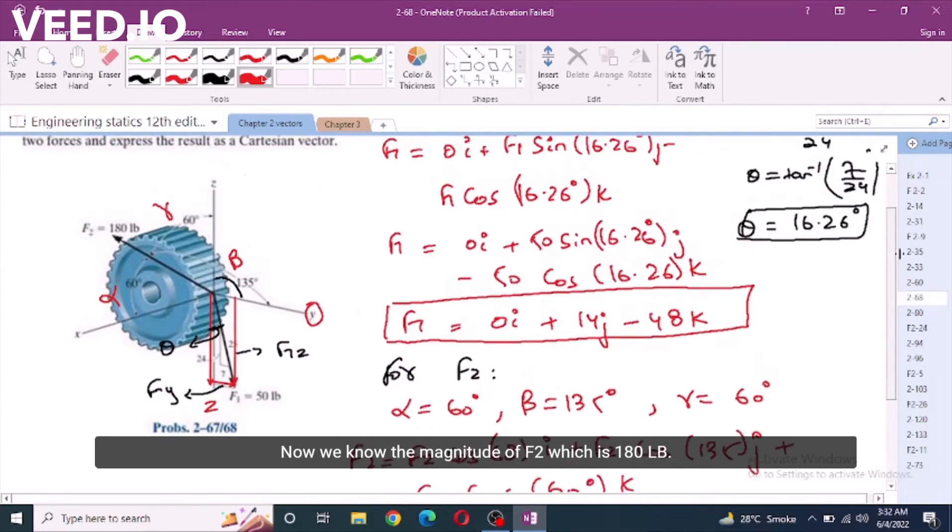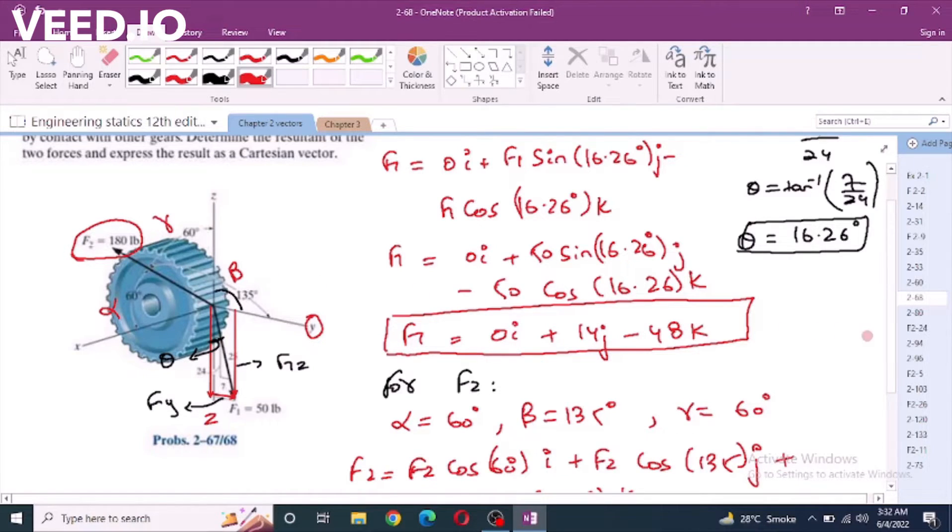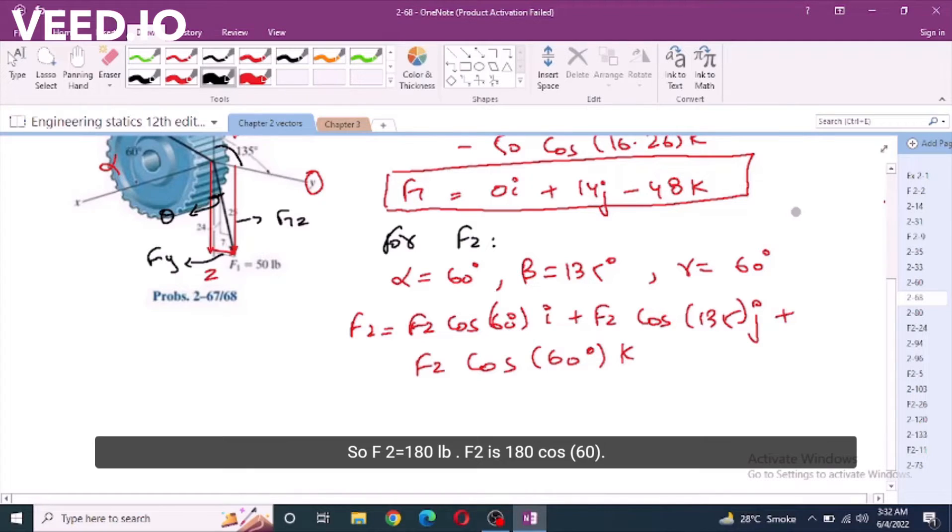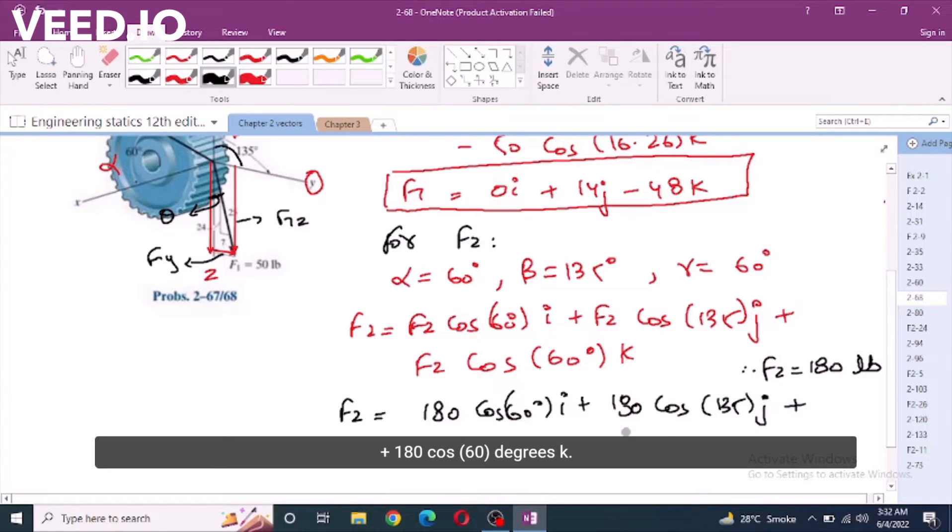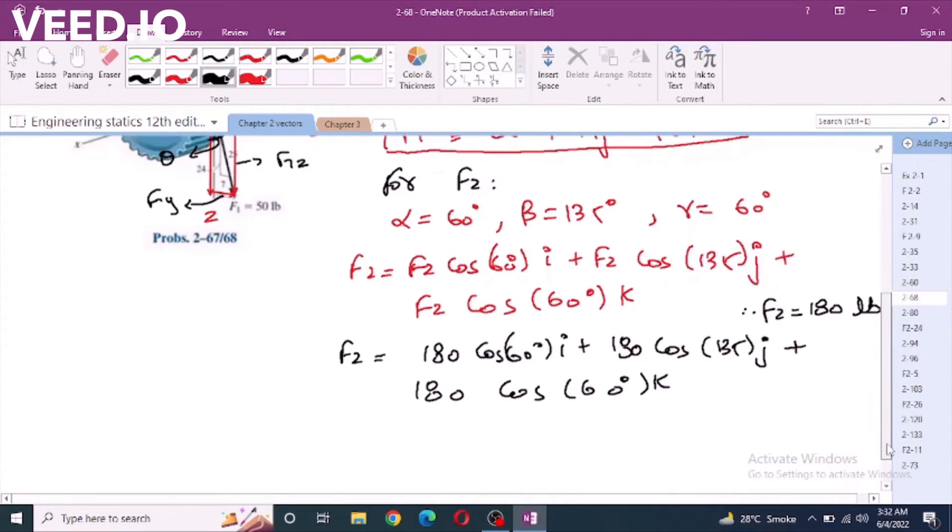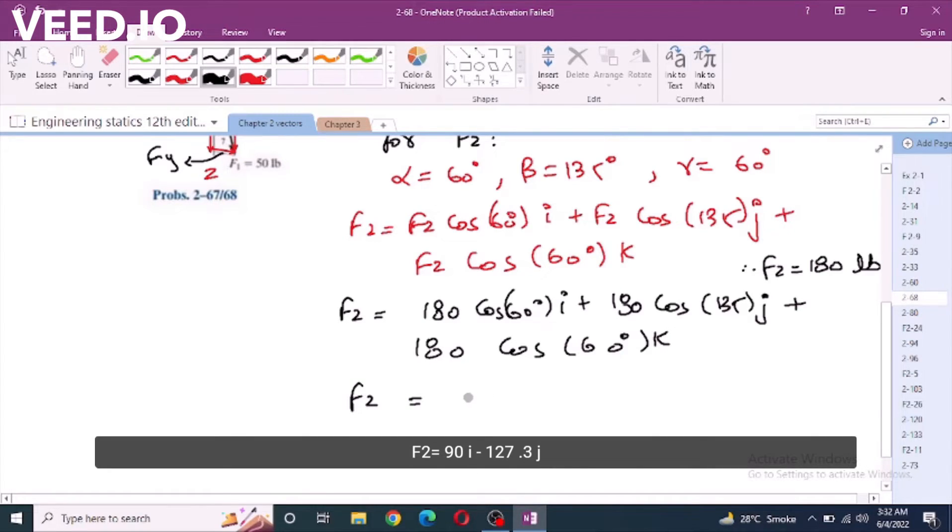Now, we know the magnitude of f2 which is 180 lbs. F2 is 180 cos 60i plus 180 cos 135j plus 180 cos 60 degrees k. F2 equals 90i minus 127.3j plus 90k.